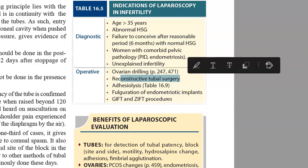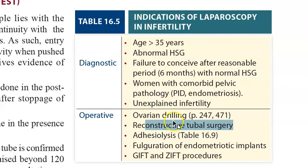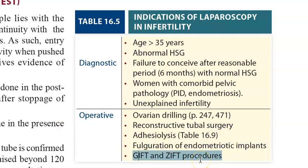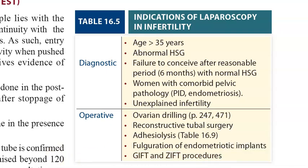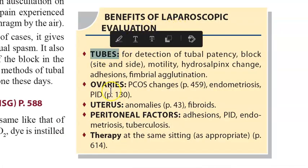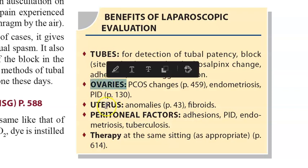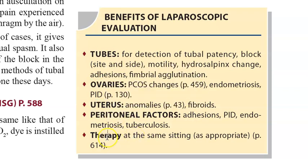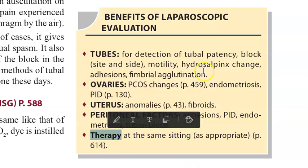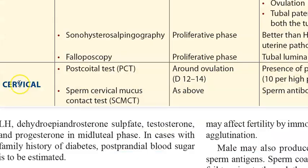Laparoscopically you can also do reconstructive tubal surgeries, adhesiolysis to break adhesions if present, and gamete intrafallopian transfer or zygote intrafallopian transfer. So laparoscopically you can check the tubes, ovaries, uterus, and peritoneal factors, and also treat appropriately.